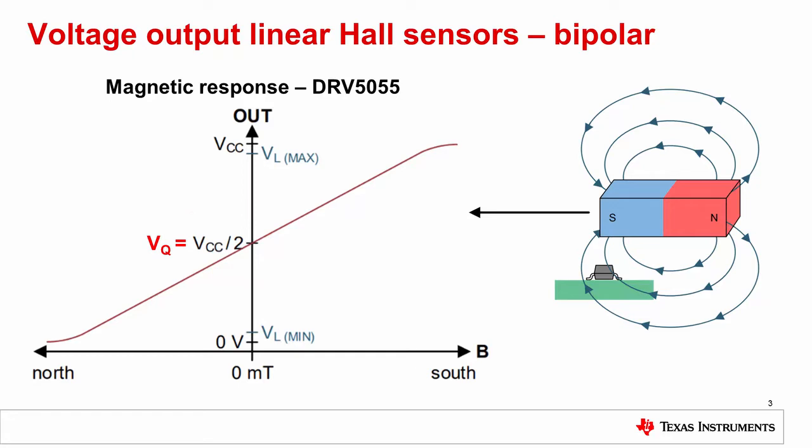Based on the strength and polarity of the magnetic field present, the device outputs voltages that are either above or below the quiescent voltage. This type of device lends itself well to applications such as the one shown on the right, where a magnet moves right and left over the Hall sensor.